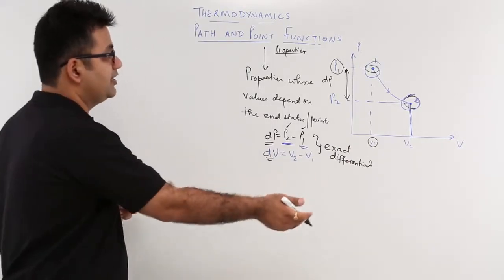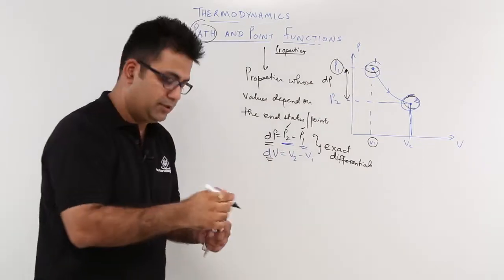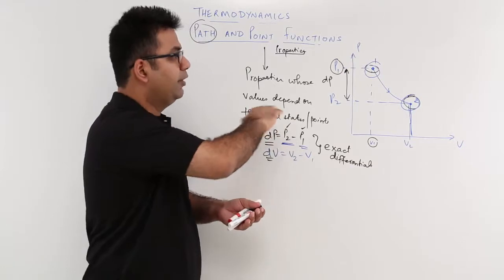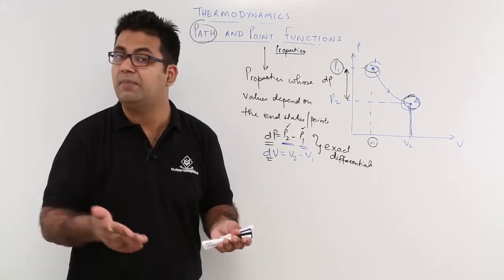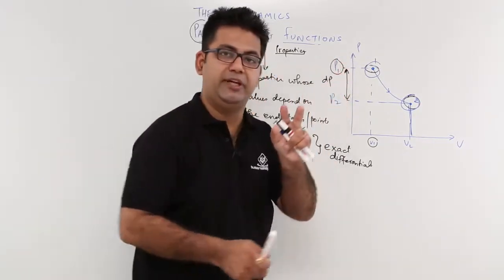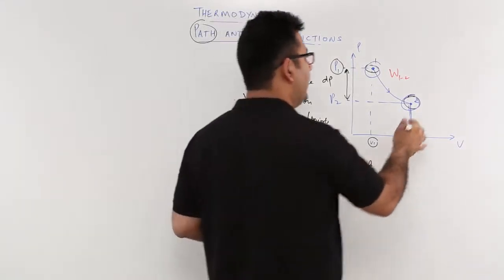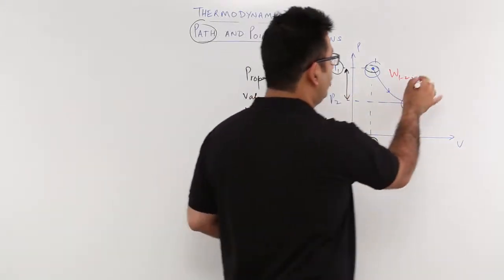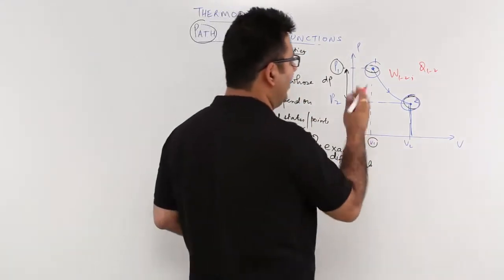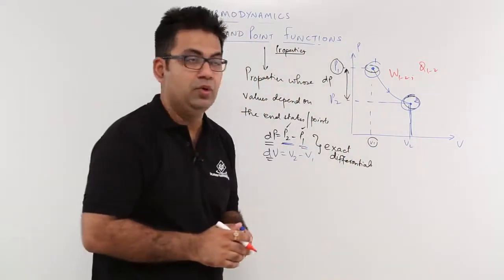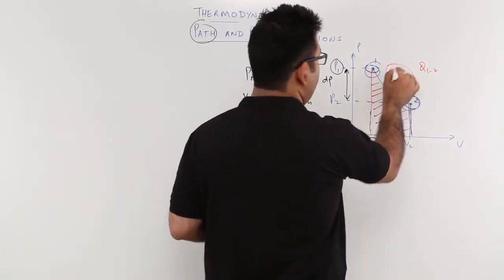Now let us take this knowledge to understand path functions. Taking the same process from state 1 to state 2, the system would have undergone some energy interaction with the surroundings — there might be a work interaction or a heat interaction. The amount of work produced is W in going from 1 to 2. Work is basically the area below the PV curve, so the area under the curve tells us the amount of work done by this particular system.